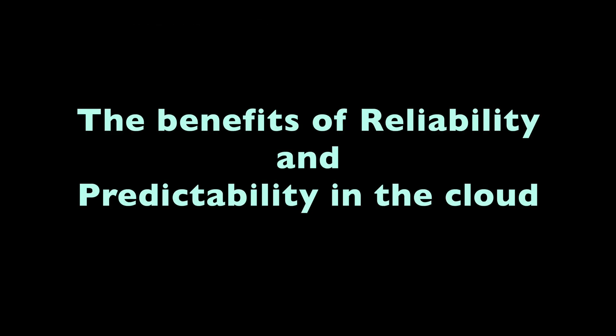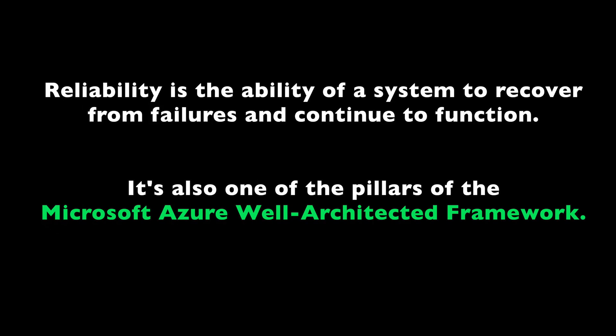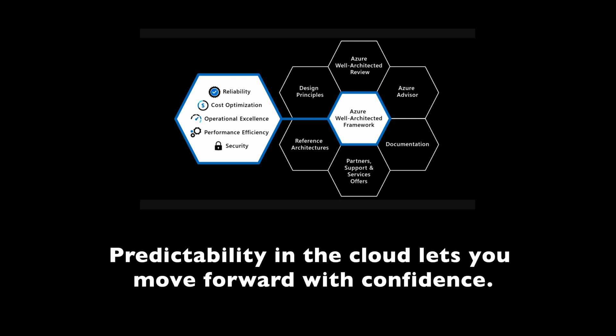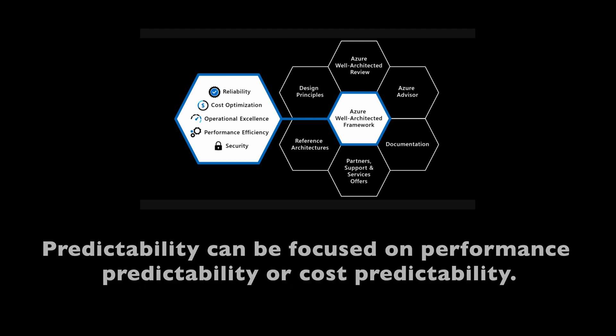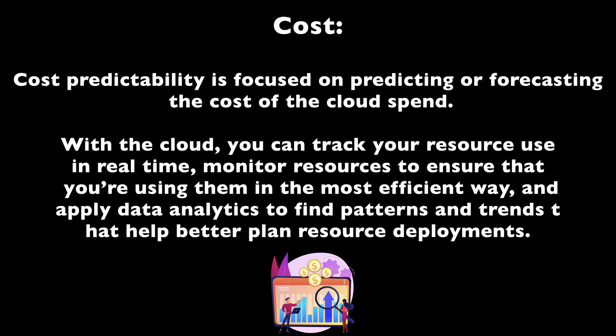Now, the benefits of reliability and predictability in the cloud. Reliability and predictability are fundamental aspects that businesses heavily rely on to maintain operations and deliver quality services. Reliability helps maintain robust infrastructure, fault-tolerant systems, and data redundancy offered by cloud services. When it comes to predictability, cloud services provide accurate forecasting, resource planning, and cost estimation, allowing businesses to make informed decisions and optimize operations.